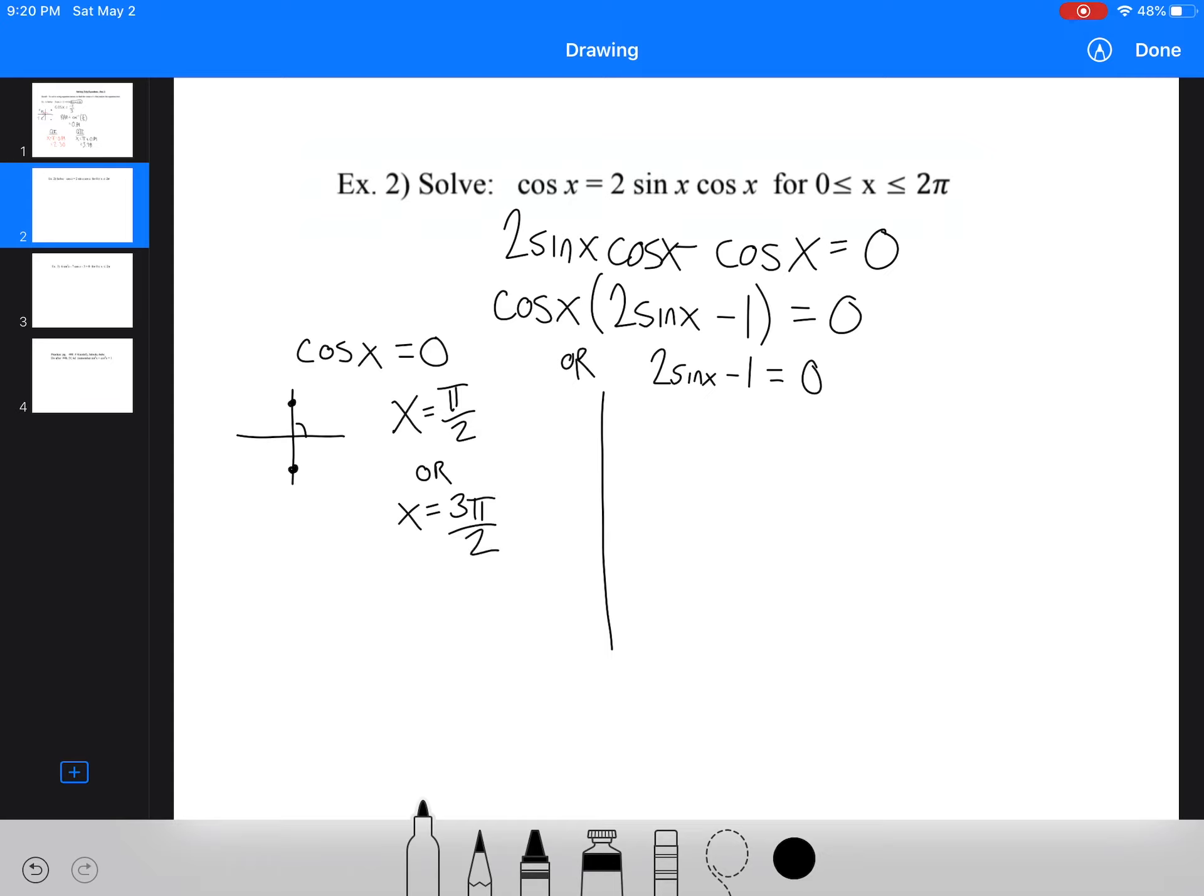Now, if I said cos x equals 1, well, that happens when x equals 1, at 0 and 2 pi. If I said cos x equals negative 1, that happens when x equals negative 1. It happens at pi, or some multiple of that.